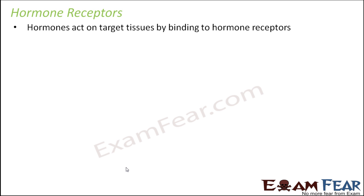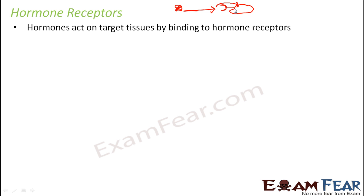Wherever the receptor is present, the hormone will bind to that receptor and act on that particular tissue. For any specific hormone that has to act on, say, the thyroid, the receptor of that hormone must be present on the thyroid gland. If there is no receptor, the hormone will not be able to bind there and will just move on, ignoring that organ. But if a receptor is present, the hormone will bind to it — and that is how the hormone acts on the organ. A hormone receptor is a must for hormone action.